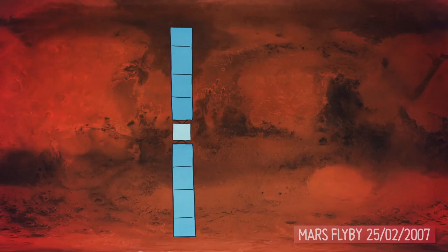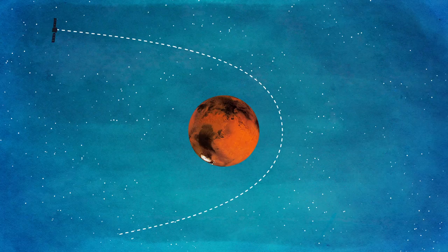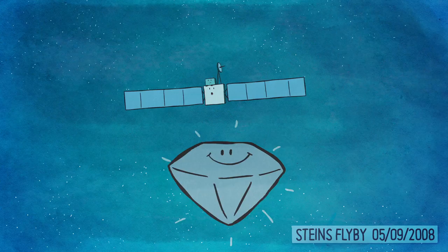Along the way, she and Philae also went to places spacecraft hadn't visited before. Rosetta found a diamond-shaped object, the asteroid Steins, and took amazing pictures for everyone on Earth to see.